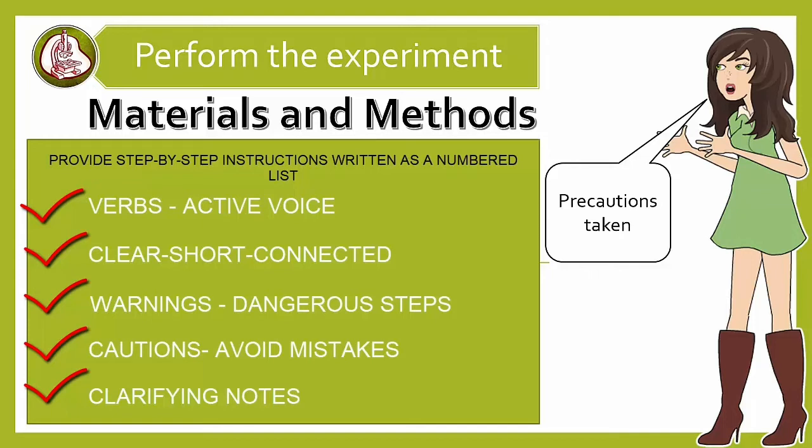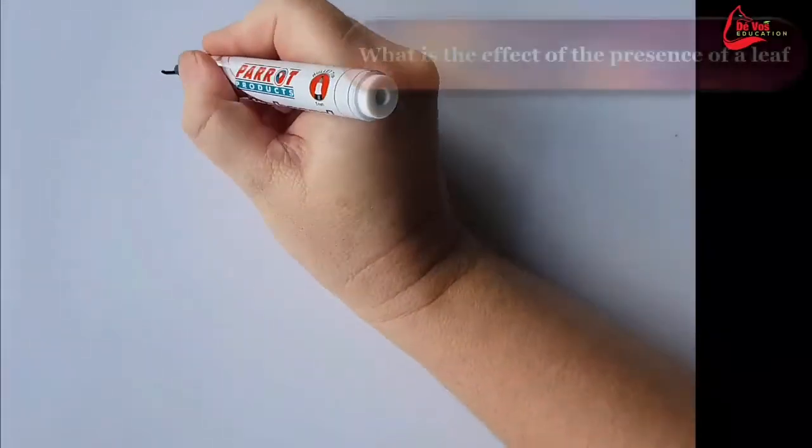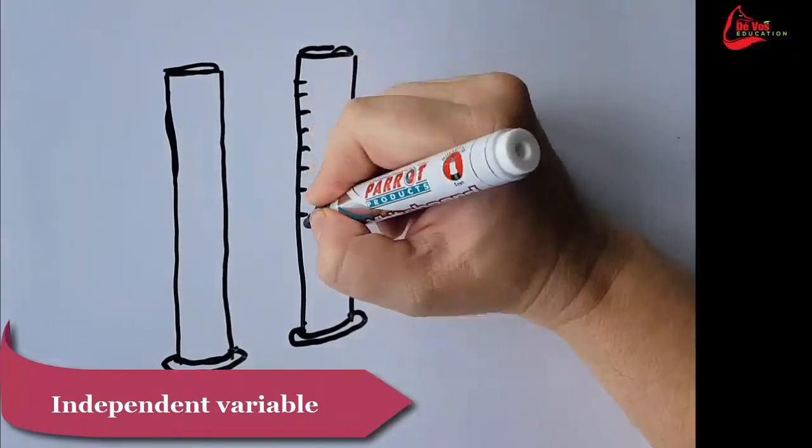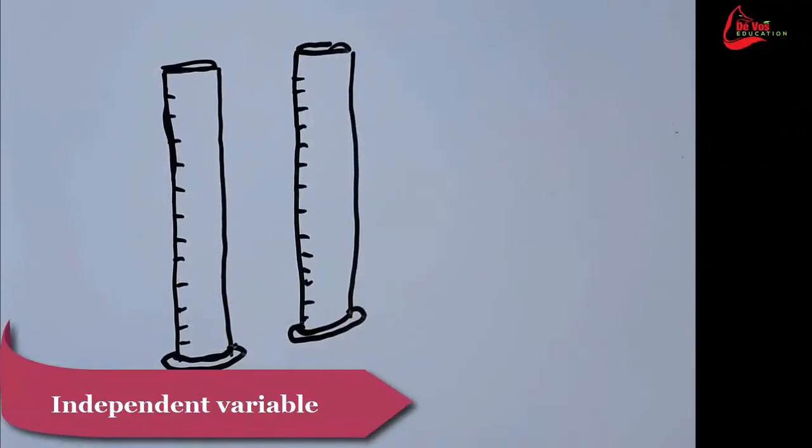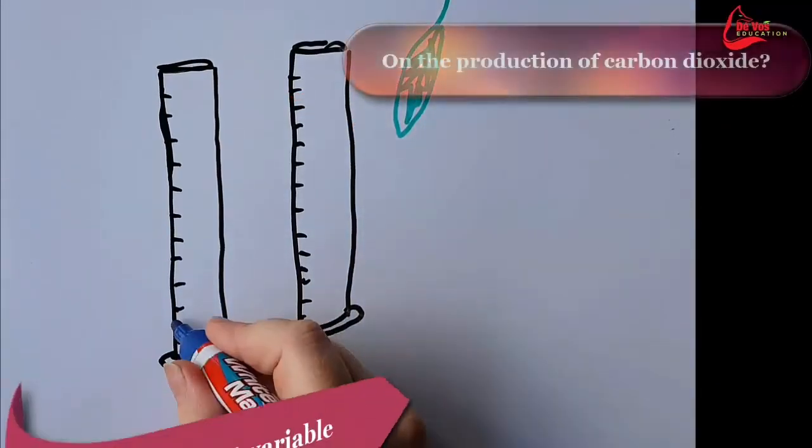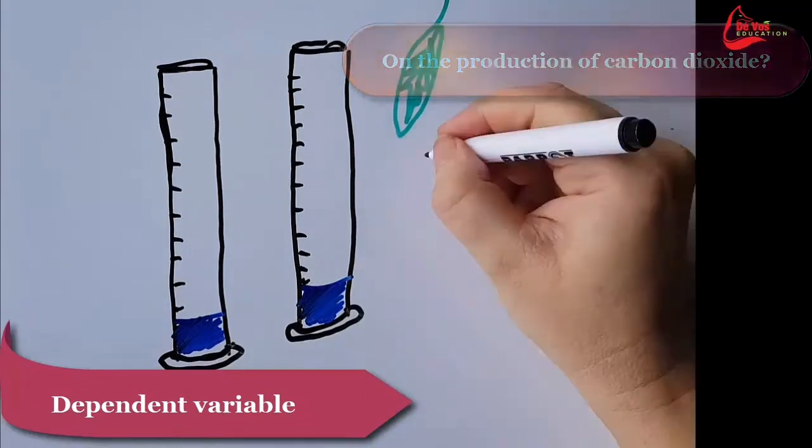Let's put all of this together in an example of an experiment. Let's ask: what is the effect of the presence of a leaf, which would then be our independent variable and that represented by X, on the production of carbon dioxide? This would be our dependent variable, what we have to measure at the end of this experiment.